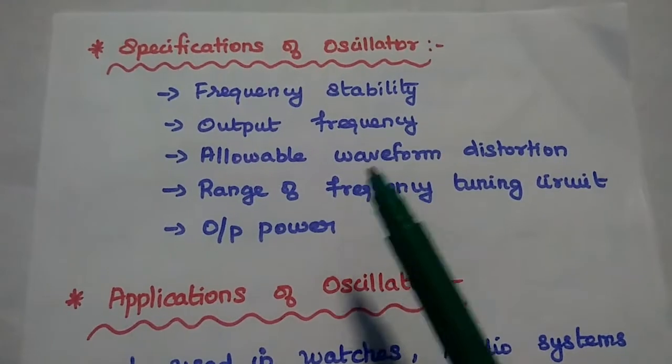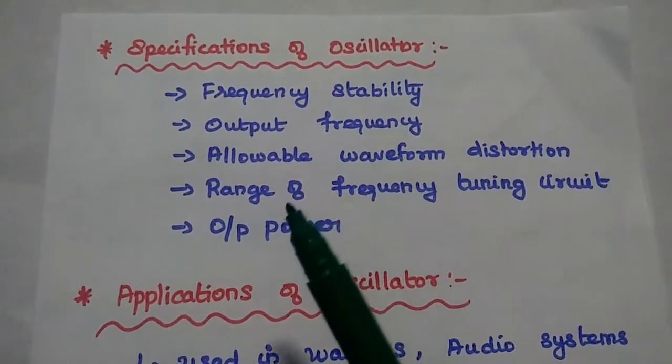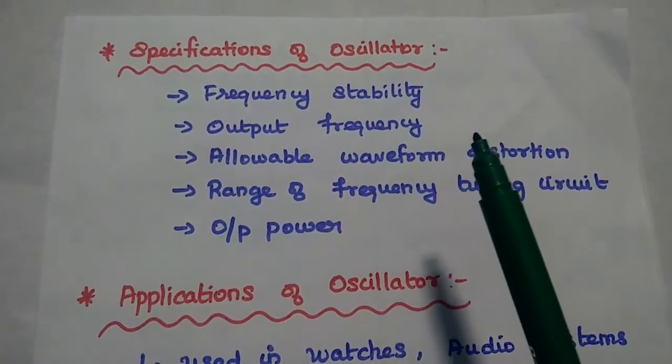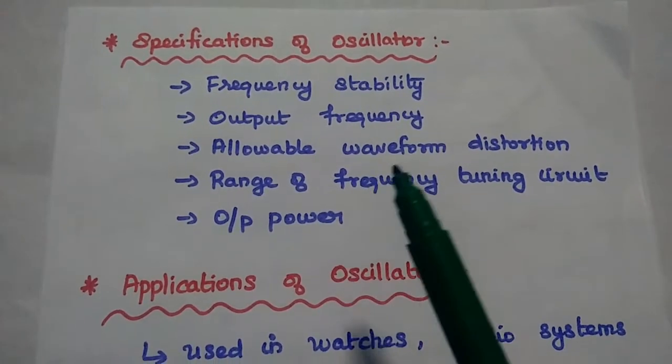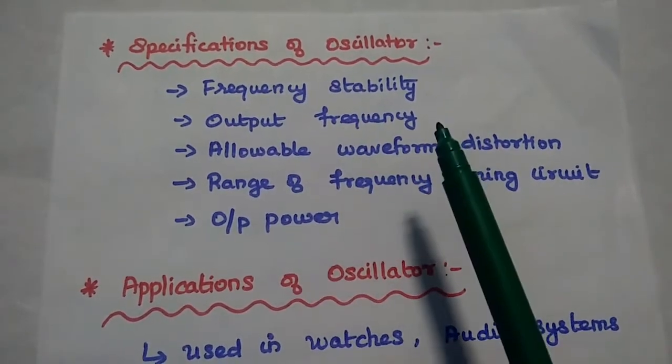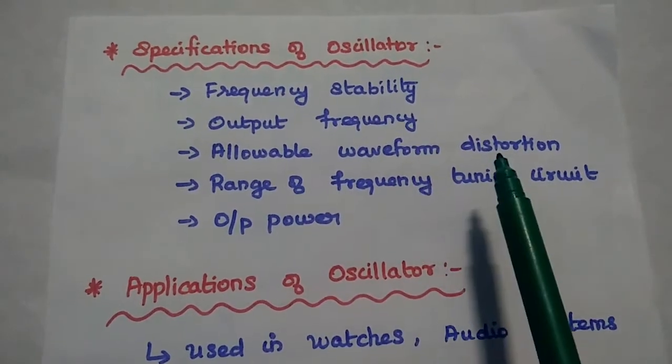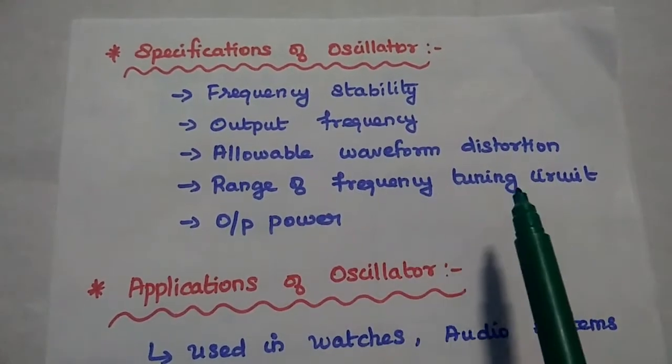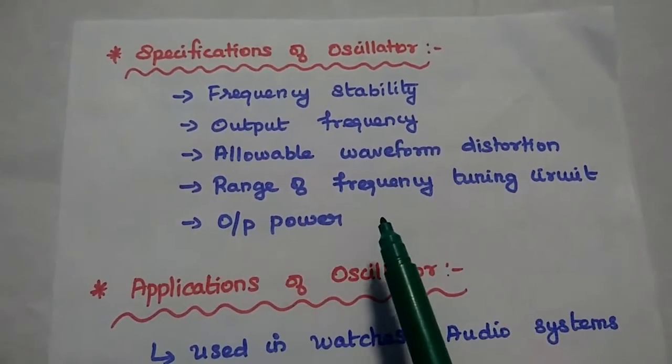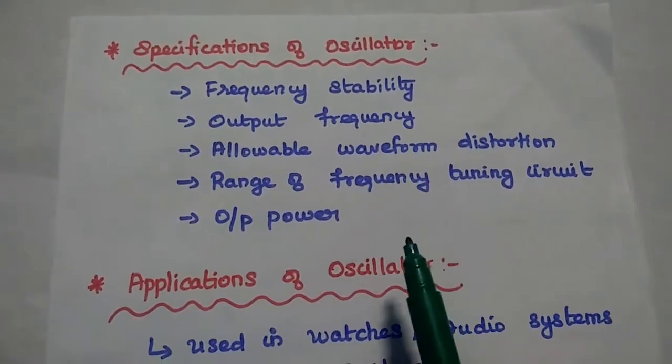Next one is specification of oscillator. So whenever we are going to select an oscillator, we have to consider some specific parameters. Those are given here. Frequency stability, output frequency, allowable waveform distortion, range of frequency, tuning circuit and output power. So we have to consider all the specifications for our applications.